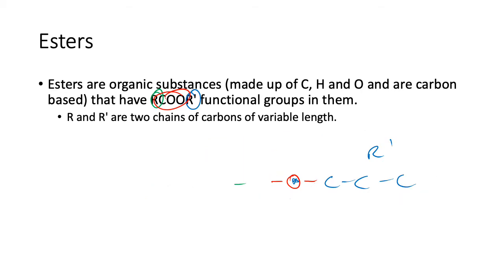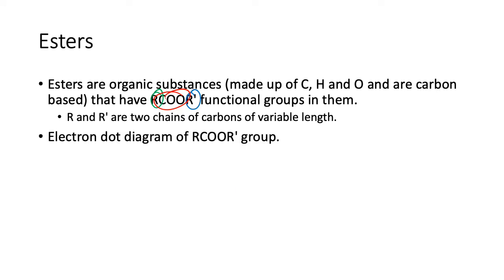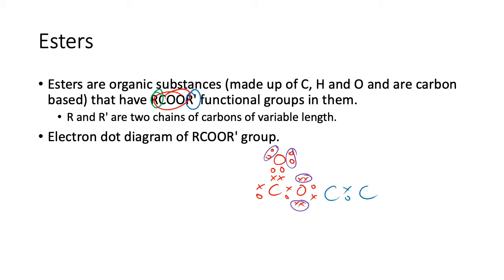It's going to be important later on when you do physical properties to notice that there are four lone pairs of electrons in the ester group. Those go on to the R group on one side, and then the R' group on the other side, just single bonded going each way. Let's move on and have a look at naming.